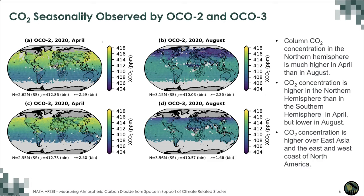Those who attended part one have seen the next two slides, so I will quickly go over them. This slide shows both OCO2 and OCO3 column CO2 concentration — the Northern Hemisphere is much higher in April than in August in the same year. CO2 concentration is higher in the Northern Hemisphere than in the Southern Hemisphere in April but lower in August. CO2 concentration is also higher in East Asia, America, and Europe than other regions.